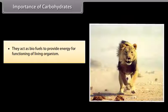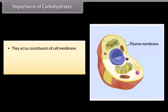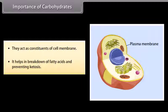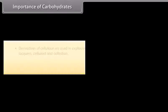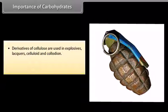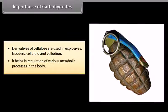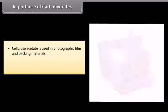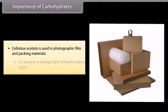Importance of carbohydrates: They act as biofuels to provide energy for functioning of living organisms. They act as constituents of cell membrane. They help in breakdown of fatty acids and preventing ketosis. Derivatives of cellulose are used in explosives, lacquers, celluloid and collodion. They help in regulation of various metabolic processes in the body. Cellulose acetate is used in photographic film and packing materials. Carbohydrates are present as a storage form of food in plants as starch.